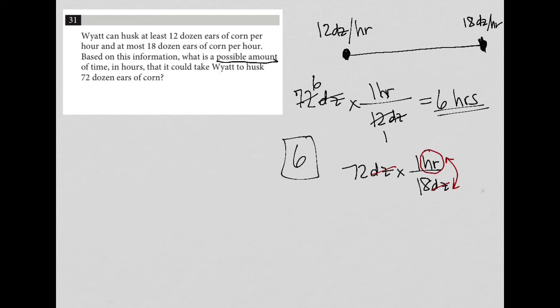The unit you want in your final answer should always be in the numerator. So in this case, 18 goes into 18 once, 18 goes into 72 four times. So at his fastest rate, it would take four hours. So that would also work as an answer, which means you should get this answer correct by either inputting four or five or six. Either of those should work.